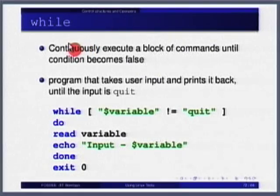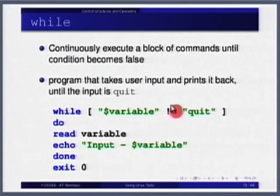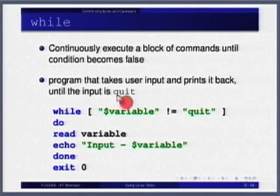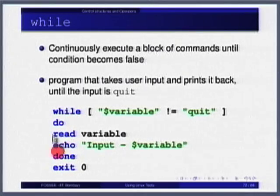Meanwhile, let us start looking at the while loop. A `for` loop is for a fixed number of entries — for every element in a list. The `while` loop runs as long as some condition is satisfied. Whatever is to be done is put between `do` and `done`.